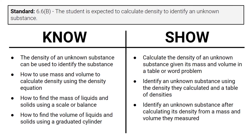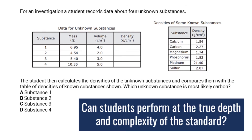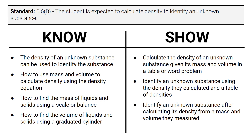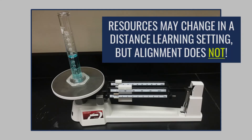Students also need to identify an unknown substance using the density they calculated in a table of densities. Students will need to show that they can go from the information they are given to the identity of an unknown substance. And finally, students must be able to identify an unknown substance after calculating its density from a mass and volume they measured. They have to master the use of scales, balances, and graduated cylinders to navigate this standard about density.